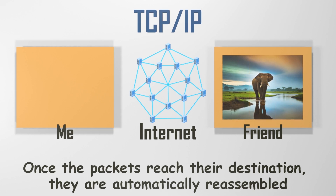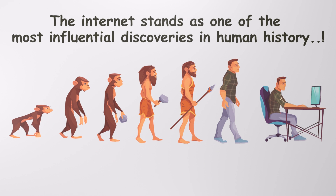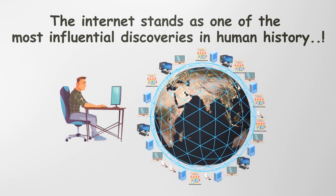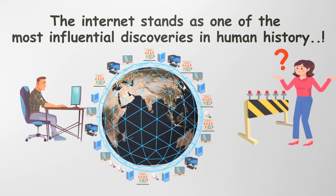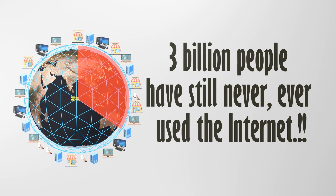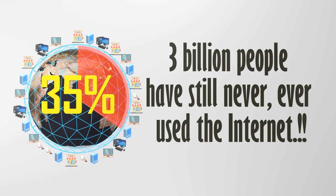That covers the basics of how the Internet works. The Internet stands as one of the most influential discoveries in human history, shaping every aspect of our world and encompassing nearly all knowledge discovered by humankind. It is a collective resource belonging to us all. However, access to the Internet remains unequal, with a significant portion of the population still lacking reliable and affordable connectivity. This digital divide carries far-reaching consequences, limiting opportunities for individuals and communities to thrive in the digital age. In some countries, governments censor and control the Internet, while in others, corporations dictate who has access to specific content and services.